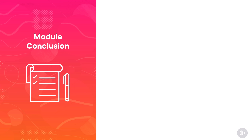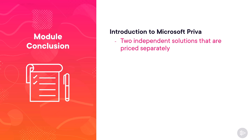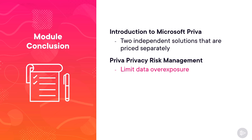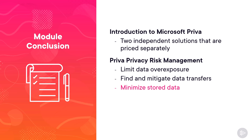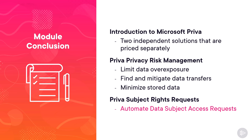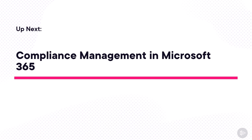To finish off this module, let's review what we have learned. We learned about Microsoft Priva — a suite of two independent solutions that empower privacy teams to reduce risk and automate subject requests. We did a deep dive into each solution: how Priva Privacy Risk Management helps us limit data overexposure, find and mitigate data transfers, and minimize stored personal data, as well as how Priva Subject Rights Requests helps privacy teams automate data subject access requests at scale. Next up, we will learn about compliance management in Microsoft 365.